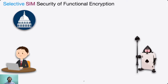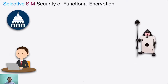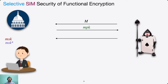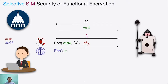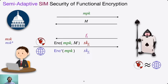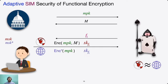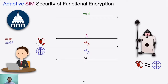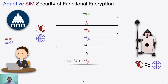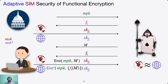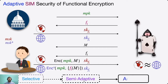Both indistinguishability and simulation security are further classified into selective, semi-adaptive, and adaptive security notions. In selective simulation security, the adversary submits the challenge message M0 before seeing any public parameters. In the semi-adaptive case, the adversary sees the master public key before choosing M0. In adaptive simulation security, the adversary can query some functional secret keys before and after seeing the challenge ciphertext. Selective security is weaker than semi-adaptive security, and simulation security implies indistinguishability-based security.